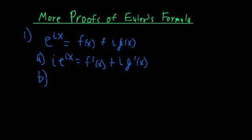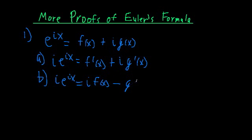We're going to go back to this expression and manipulate it a different way. This time, we're going to multiply both sides by our imaginary unit I. So we get I times E to the IX is equal to I times F of X plus I squared times G of X. We know that I squared is negative 1, so we can just say minus G of X. Now we have two expressions here, and if you notice, these two expressions are equal to the same thing: I times E to the IX.